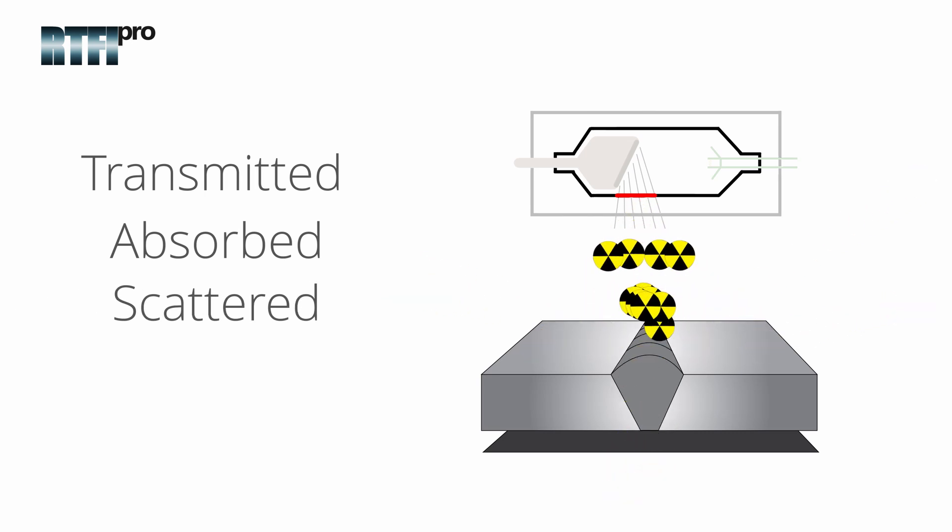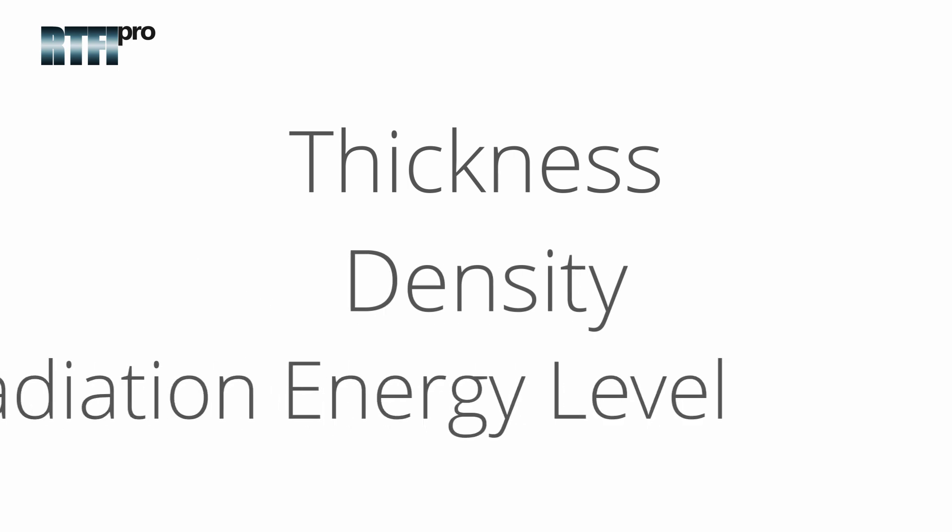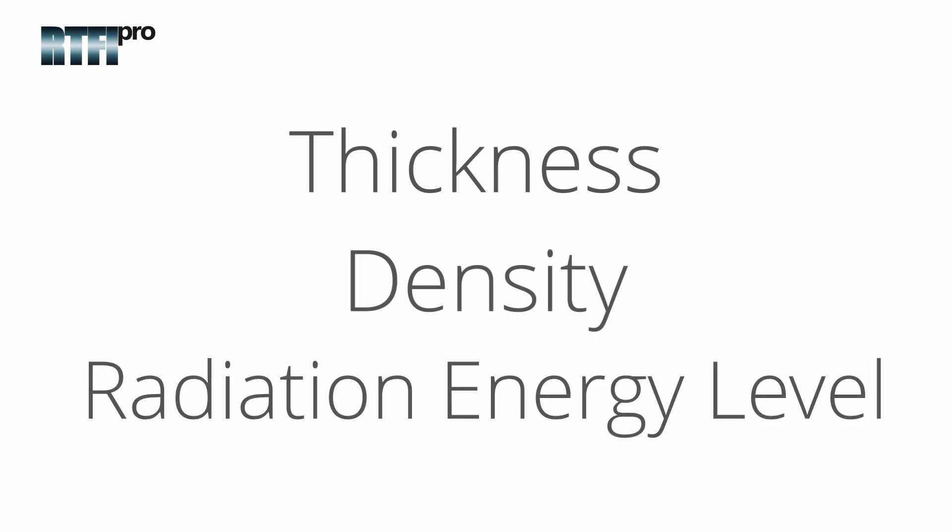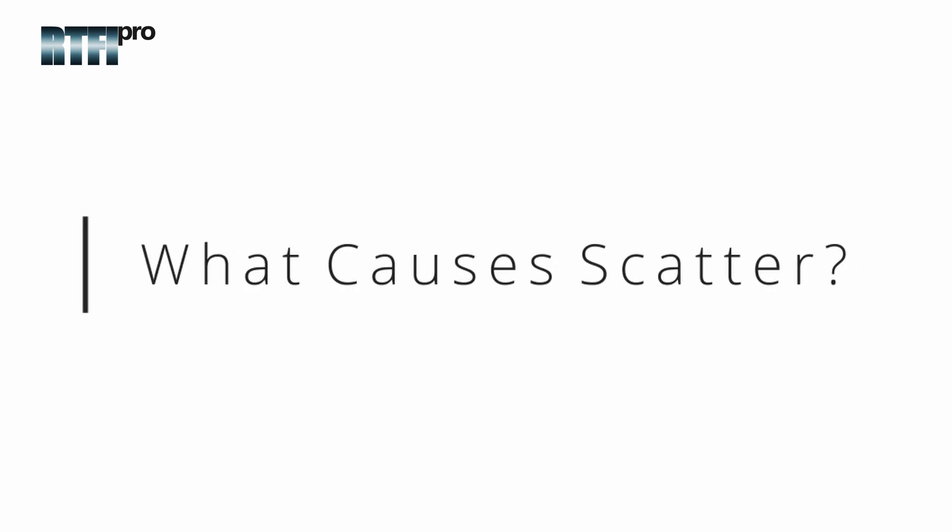The ratio of these photon interactions depend on the materials thickness, density, and radiation energy level. To understand how to control scatter, first we need to understand what causes scatter.